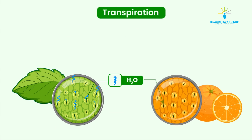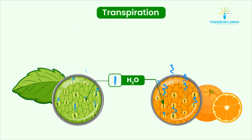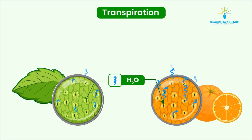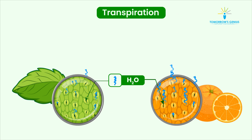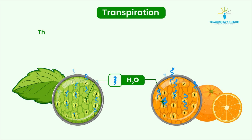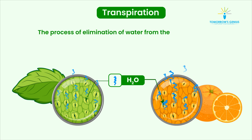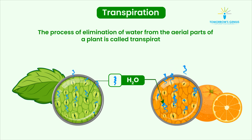Excess water is also excreted from the plant body through stomatal pores and from the surfaces of fruits and stems. The process of elimination of water is called transpiration.